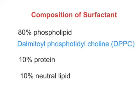Now let's look at the composition of surfactant. 80% of surfactant is composed of phospholipid. Within that, the major phospholipid is dipalmitoyl phosphatidylcholine, which is also called dipalmitoyl lecithin. This phospholipid is the highest composition in surfactant.